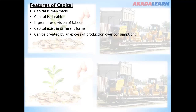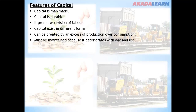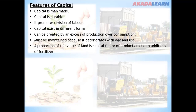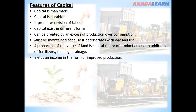Some countries focus more on consumption than production and cannot create capital. Capital can be created by an excess of production over consumption. Capital must be maintained because it deteriorates with age and use. A proportion of the value of land is also a capital factor of production, due to additions such as fertilizer, fencing, and drainage, which yield income in the form of improved production.